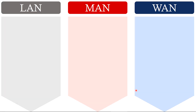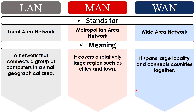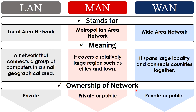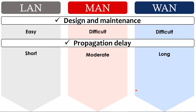Now let's see the differences between LAN, MAN, and WAN. LAN stands for Local Area Network, MAN for Metropolitan Area Network, and WAN for Wide Area Network. LAN connects computers in a small geographical area; MAN covers relatively large regions such as cities and towns; WAN spans large localities and connects countries. LAN is a private network, while MAN and WAN can be private or public. The design and maintenance of LAN is easy, while MAN and WAN are very difficult.